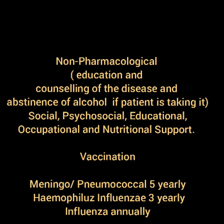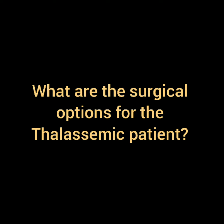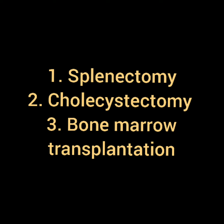Pharmacological strategy consists of repeated blood transfusions plus iron chelating agents. The surgical options for the thalassemic patient are splenectomy, cholecystectomy, and bone marrow transplantation. Cholecystectomy is indicated because hemolysis may lead to pigmented stone formation in the gallbladder.